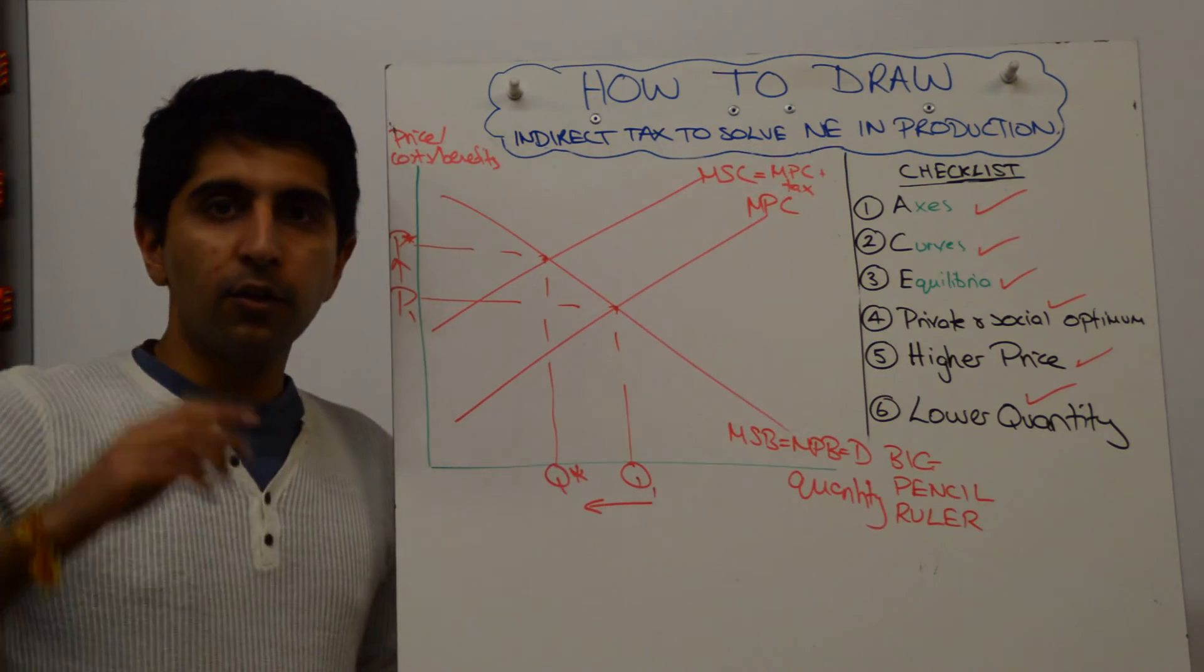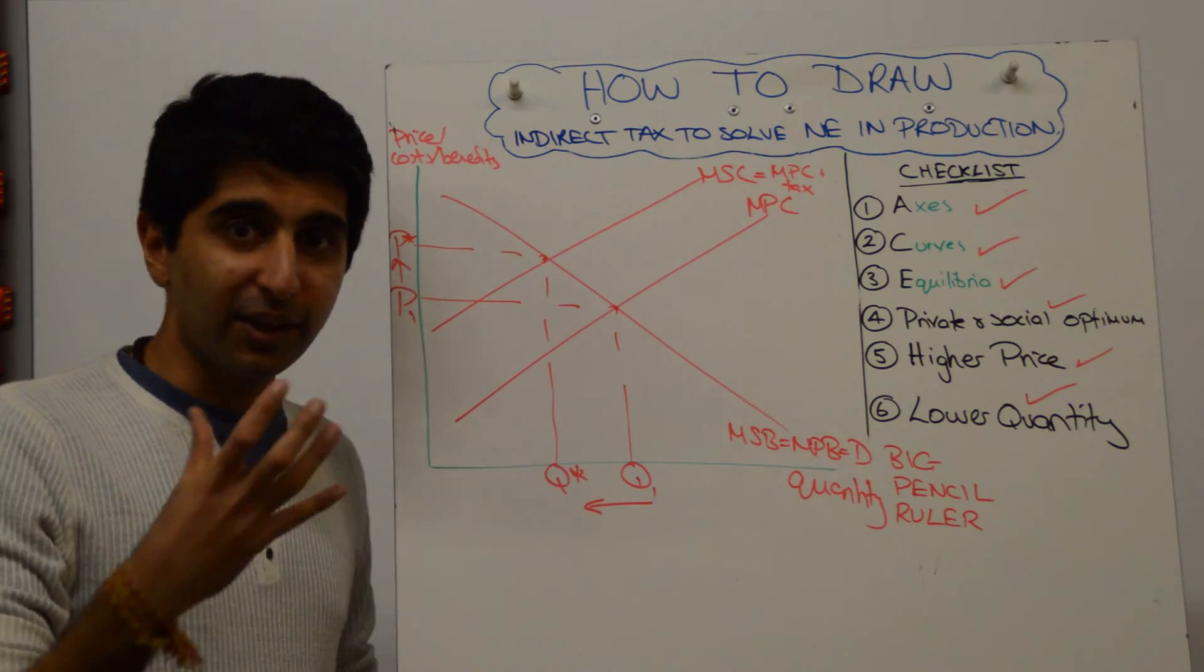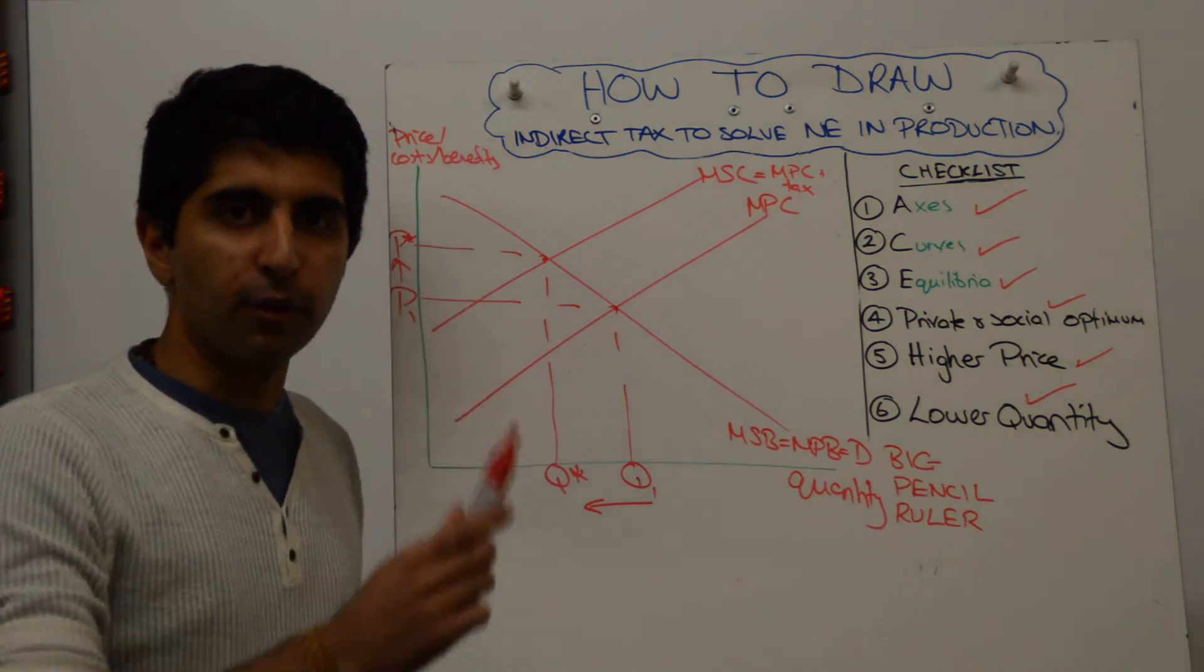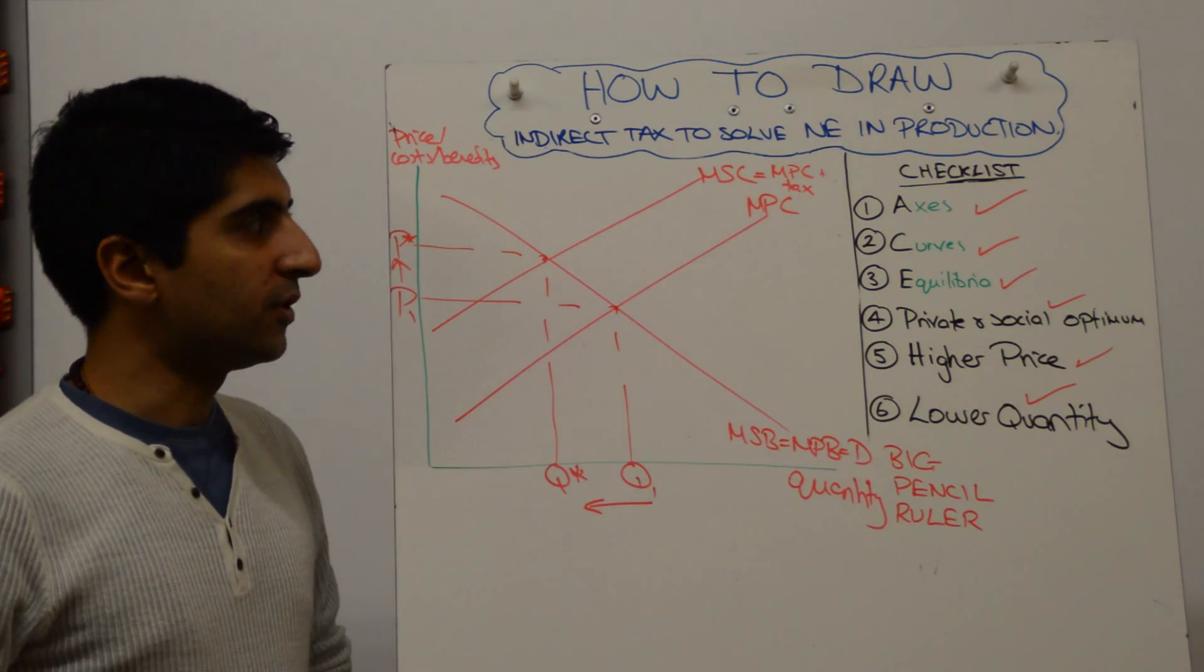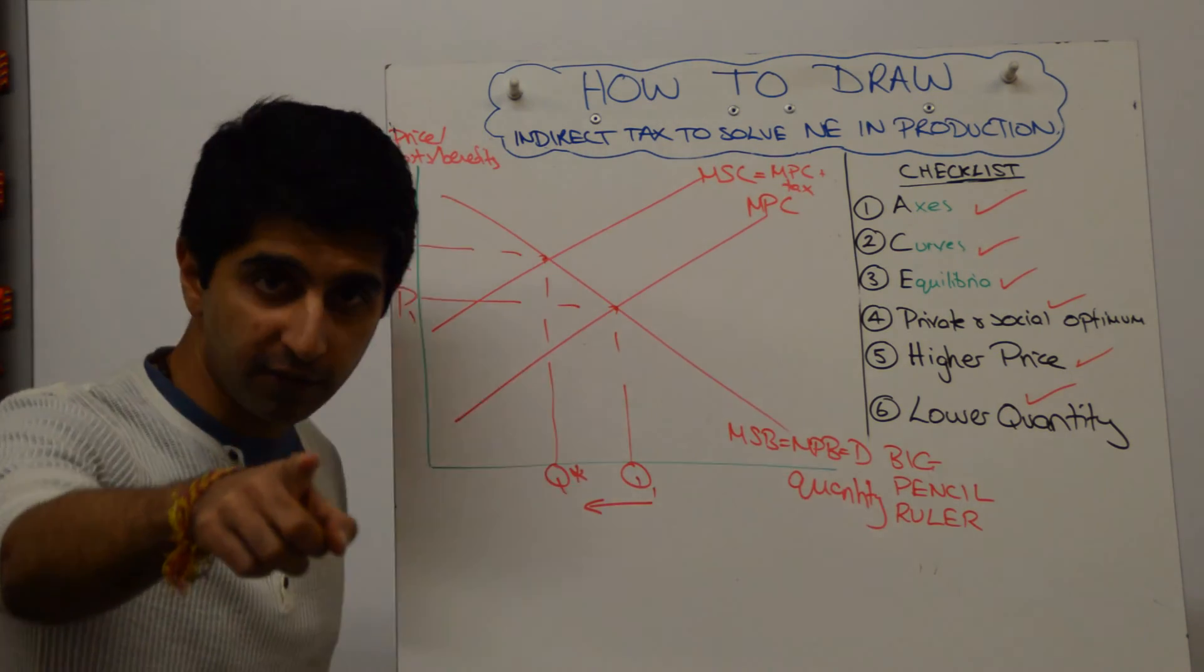So always, before you draw diagrams, check that you know what you're doing and double check that you've done it. Make sure your diagram is drawn big, in pencil and with a ruler so that they are presented beautifully. That's how you draw an indirect tax to solve negative externality in production. See you for the next video.